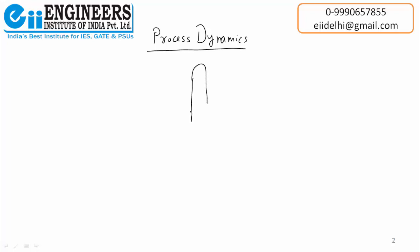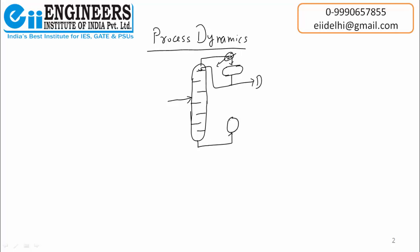Consider the example of a distillation column. In a distillation column, there are a number of trays, feed comes in, there is a reflux drum before the condenser, then there is a reflux, the top product, a reboiler, and the bottom product. This is a distillation column that is already installed in the industry.